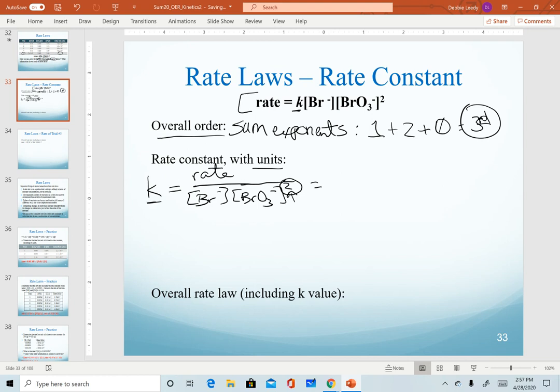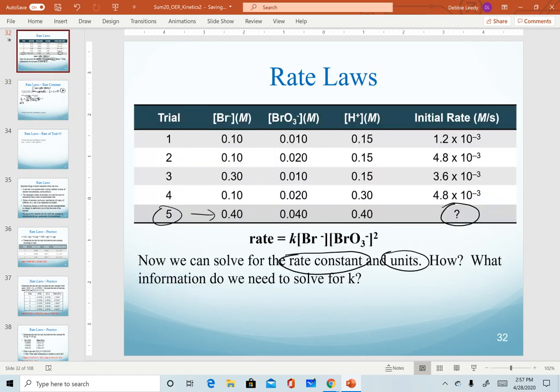Now because this is a rate constant and is constant at a given temperature, we can use any of our four known trials to solve for it. And in fact, I encourage you to use all four and confirm that you get the same value of k. I am going to randomly pick trial number three. Again, you can pick any one of our trials from our previous data table.